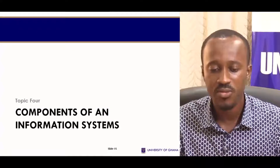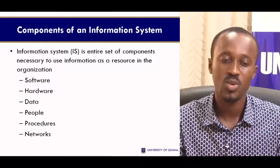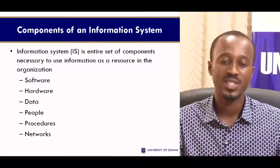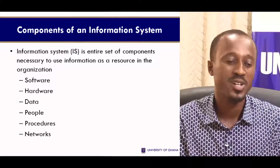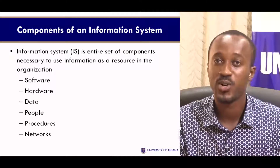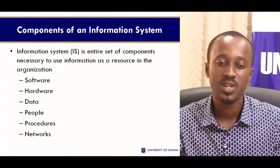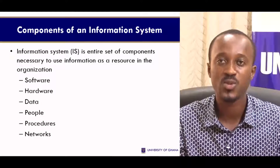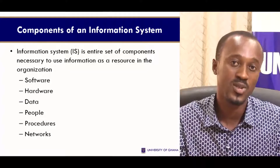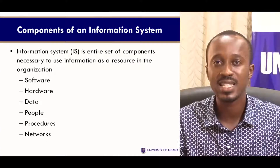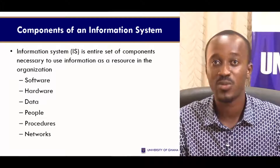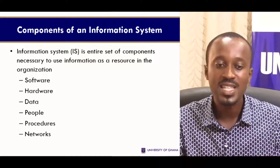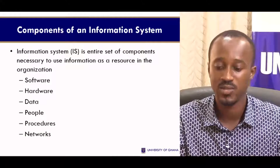Moving on, let's look at the components of an information system. An information system is an entire set of components — it's not just physical hardware like a PC, laptop, or computer. The components of an information system consist of: software, hardware, data, the people who will use the system and software, the procedures and steps in the organization's operations with regards to information, and the networks within the organization used for business exchange. All of these come together to form the components of an information system.